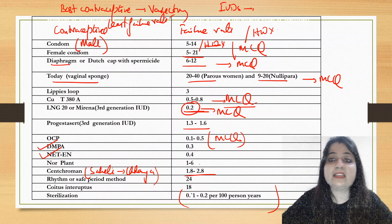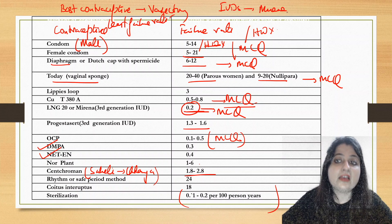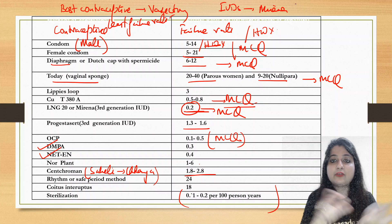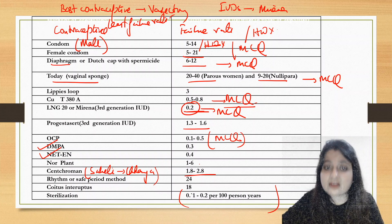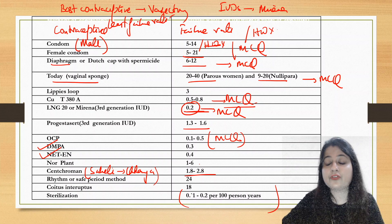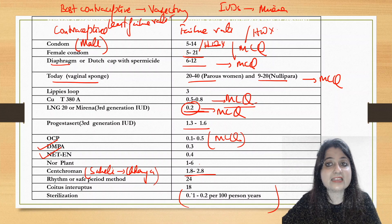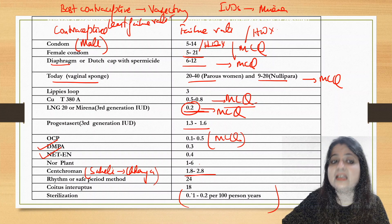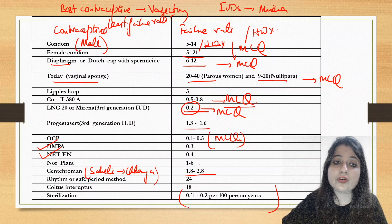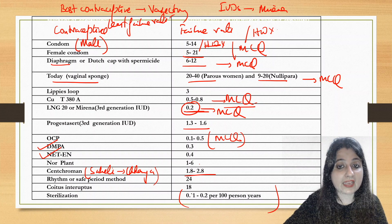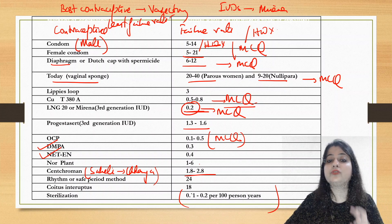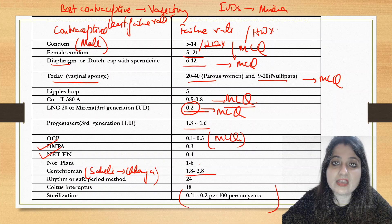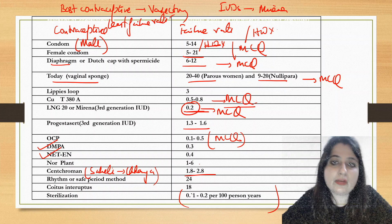Out of all the intrauterine devices, least failure rate is for Myrena. So you could be getting an option: which of the following has the least failure rate? Myrena has the least failure rate out of intrauterine devices. Sterilization has the least overall, then you must also remember Copper T 380A which is important, and oral contraceptive pills 0.1 to 0.5. Any of this can turn up in your MCQs.